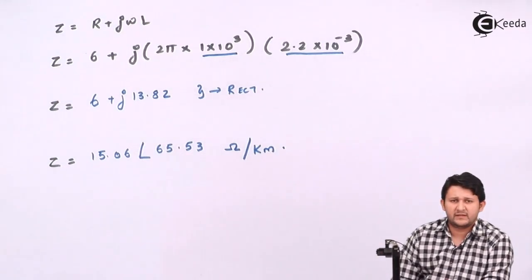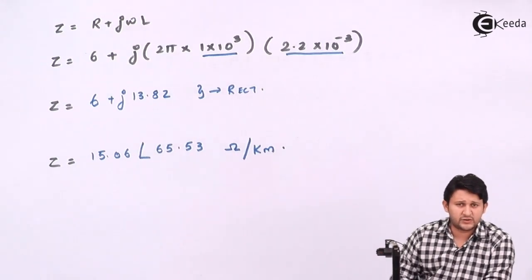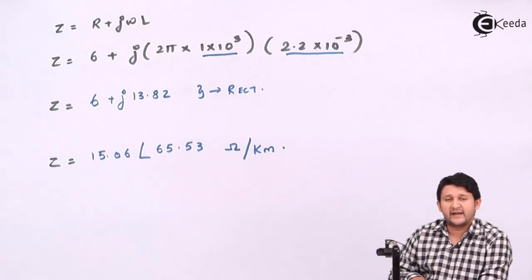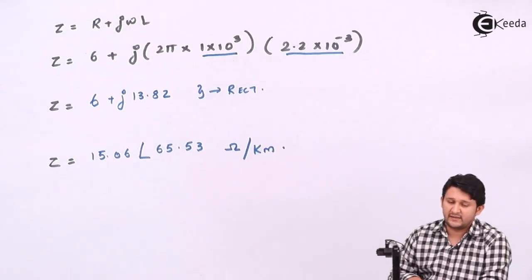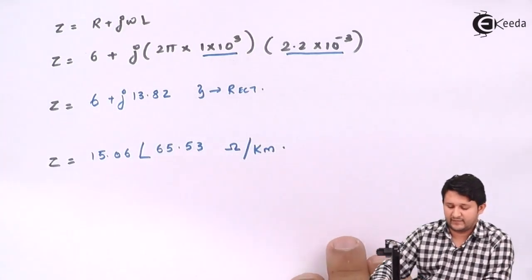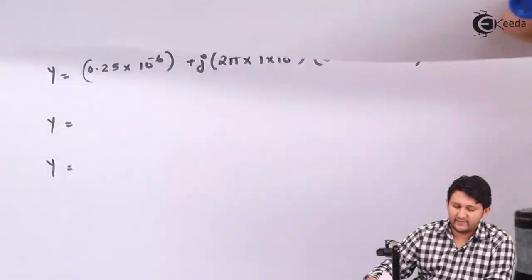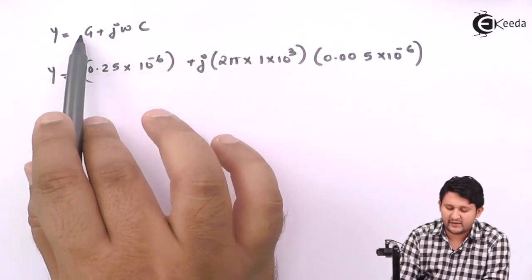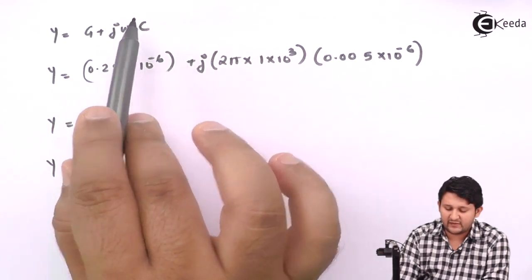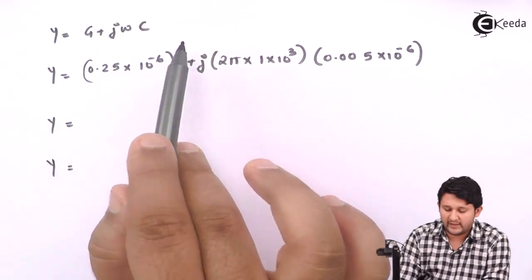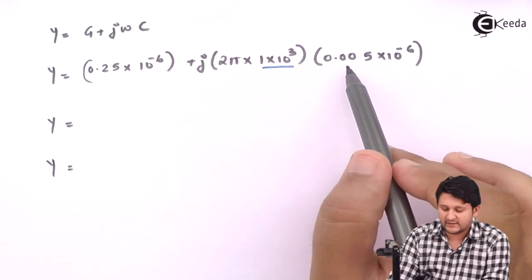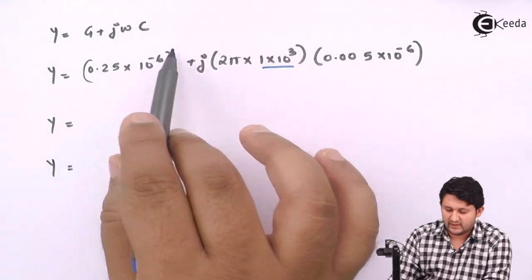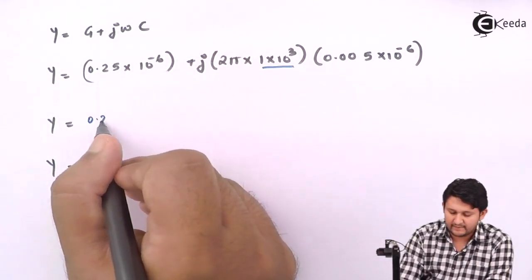Z wasn't what was being asked — the question asks for characteristic impedance Z0. To find Z0, I need both Z and Y (admittance). For Y, the formula is similar to Z: Y = G + jωC. Instead of R we use G, and instead of L we use C. Put in G = 0.25×10⁻⁶ and f = 1 kHz, C = 0.005×10⁻⁶.